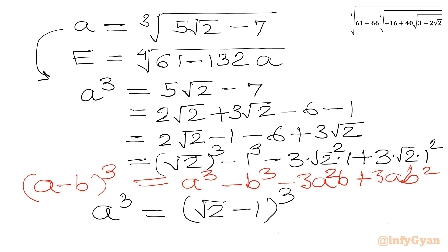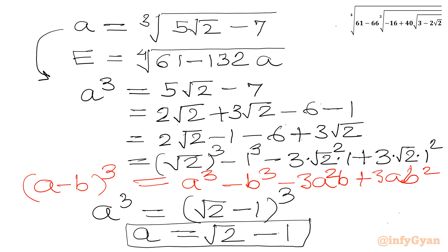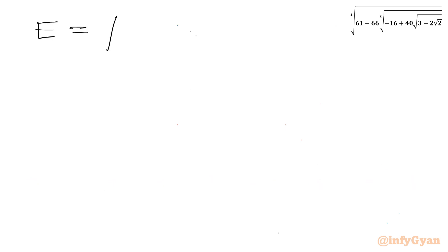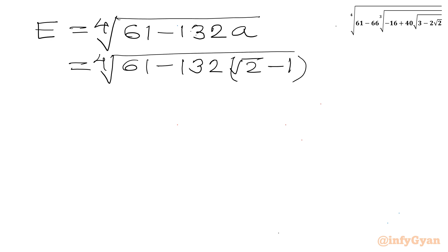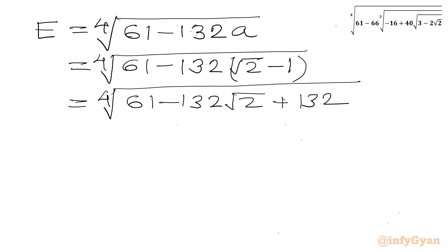Taking the cube root of both sides gives A = √2 − 1. Substituting back: E = 4th root of (61 − 132·(√2 − 1)) = 4th root of (61 − 132√2 + 132) = 4th root of (193 − 132√2).